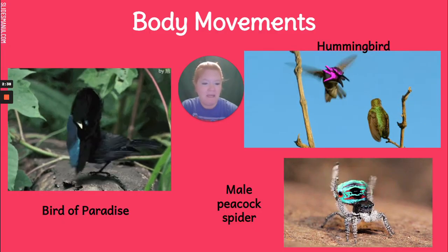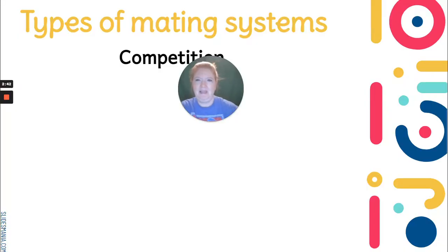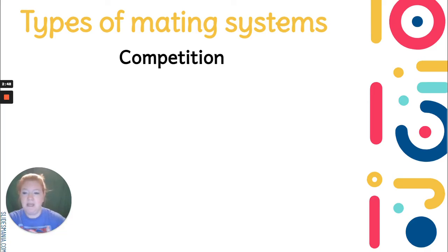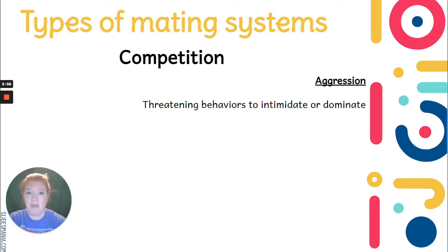And then there's the male peacock spider. Besides those sounds, body movements, and pheromone smells, there's also competition. Some animals will exhibit aggression — they might show threatening behaviors to intimidate or dominate, and that's to keep other potential mates away.